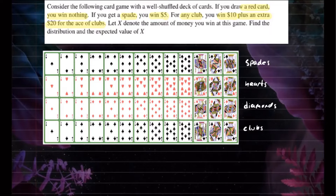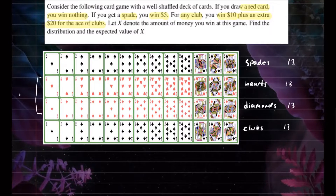These are the four suits in a deck of cards, and we know there are 13 of each. You have numbers 2 to 10, ace, jack, queen, and king — so 13 of each suit. With 13 of each, you have two suits that are red — hearts and diamonds — and two suits that are black — spades and clubs.